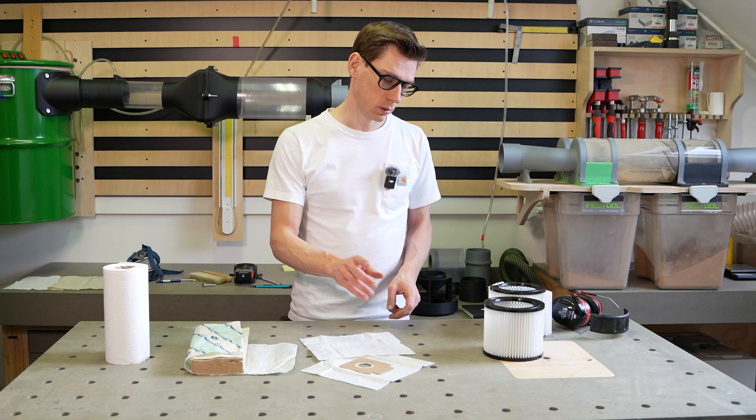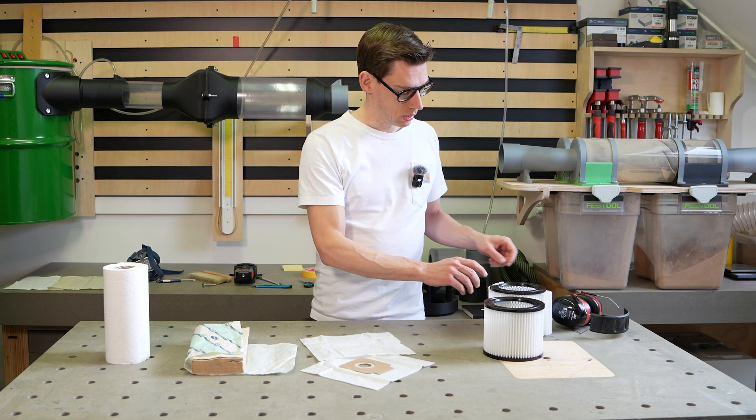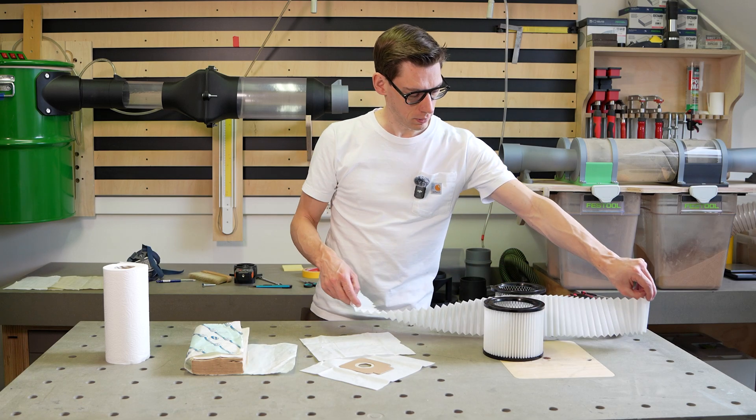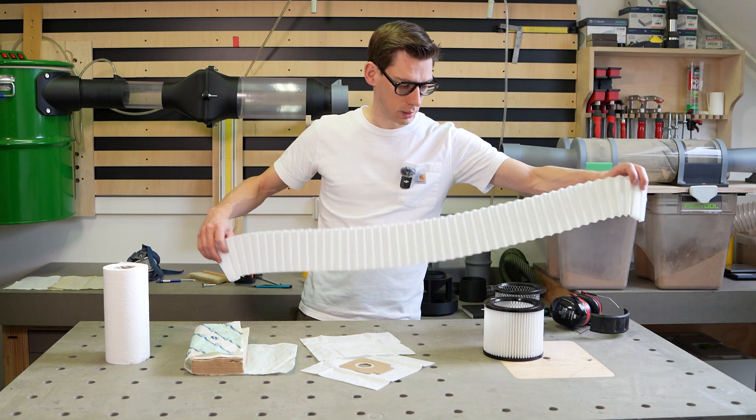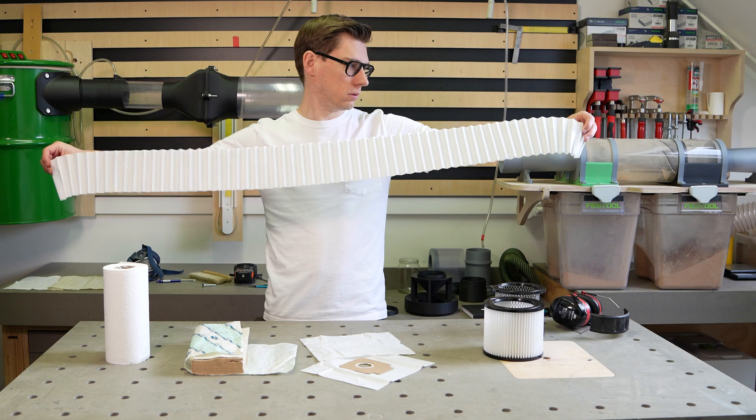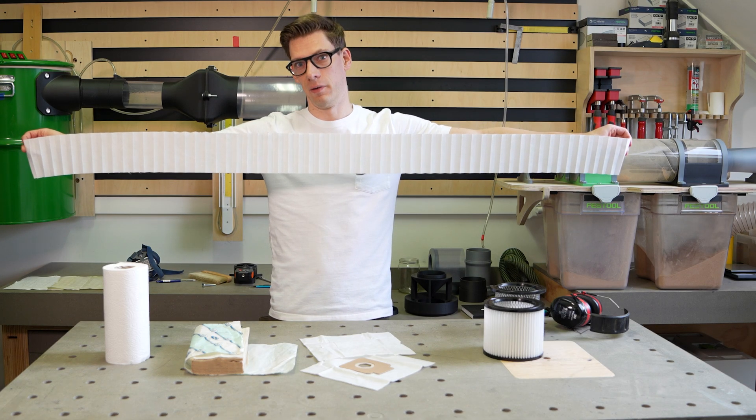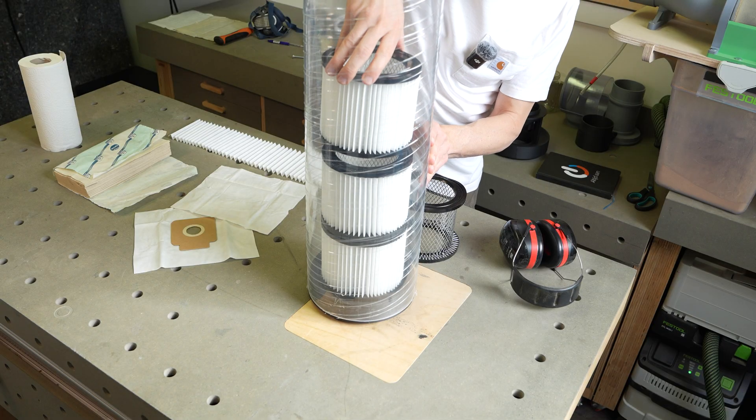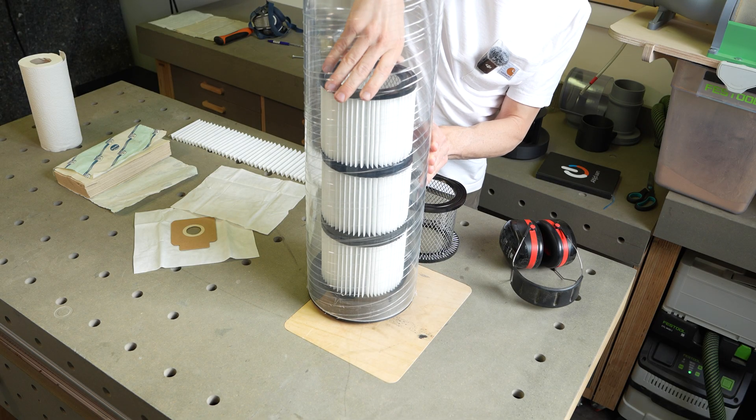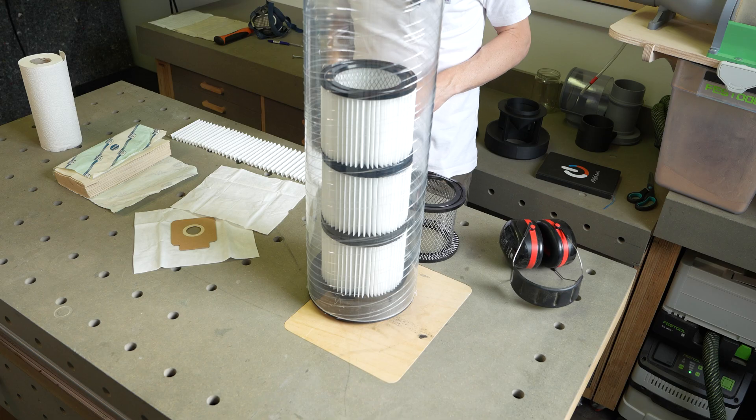And for that cartridge filters are made. They have a very large filter area in a compact size. So compared to the vacuum bag, it's much more area. And when we stack more of them together, I think we can reduce the friction even more.